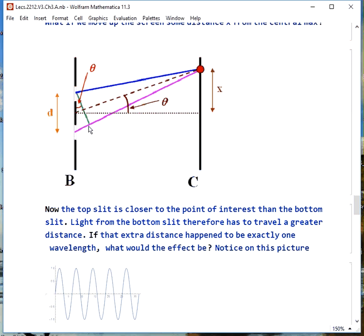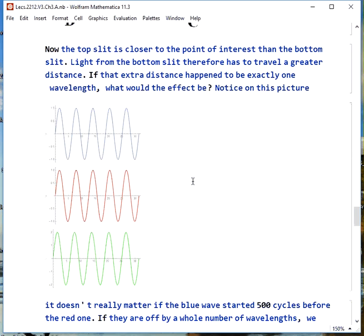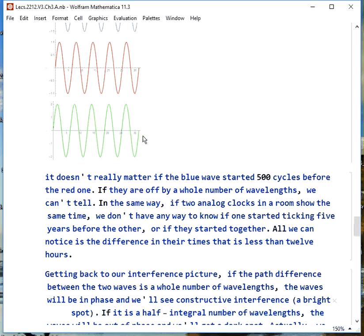If that happens to be exactly one wavelength, then when the rays meet up here, a distance x from the central maximum, if they're just one wavelength out of phase, that looks the same as in phase. For example, here on this picture that we started with, what if the blue wave had started 500 cycles before the red one, and the red wave had started 10 cycles before? It wouldn't make any difference. They're still in phase. They look exactly the same. If they're off by a whole number of wavelengths, they're equivalently not off at all.